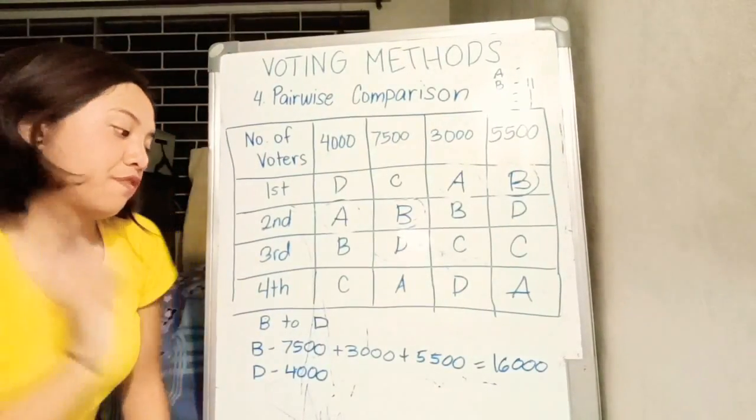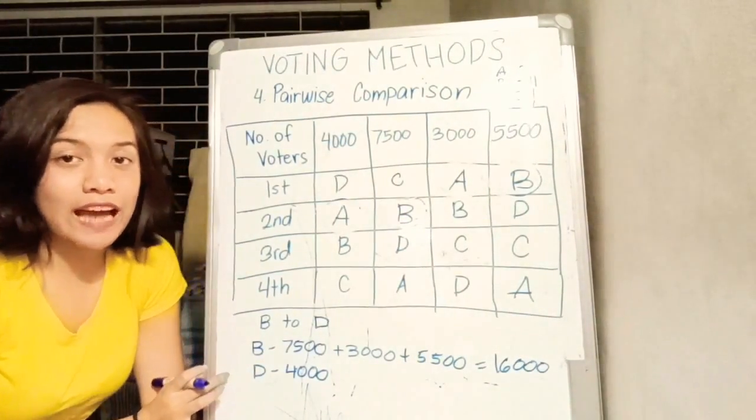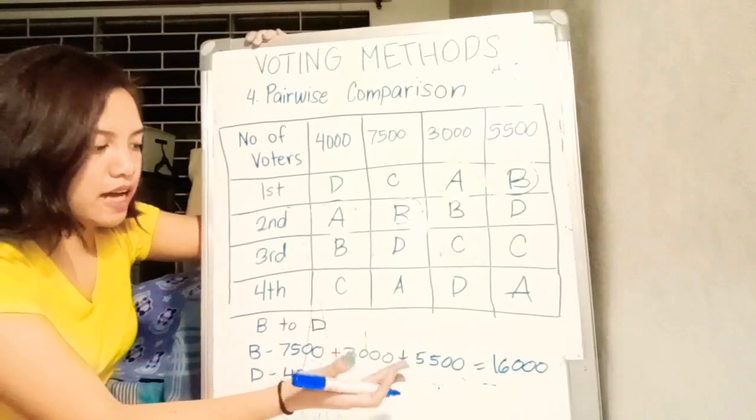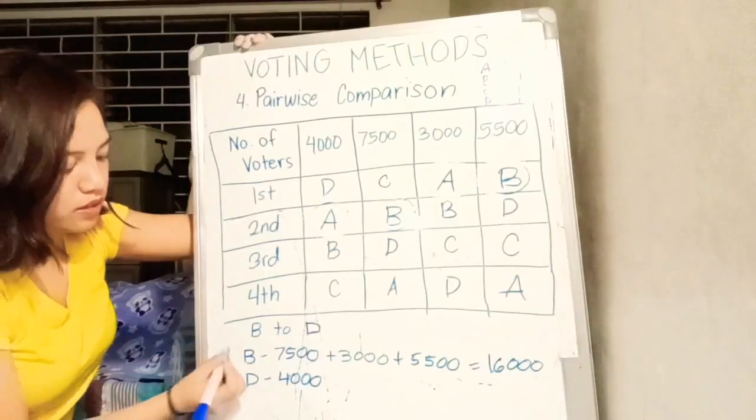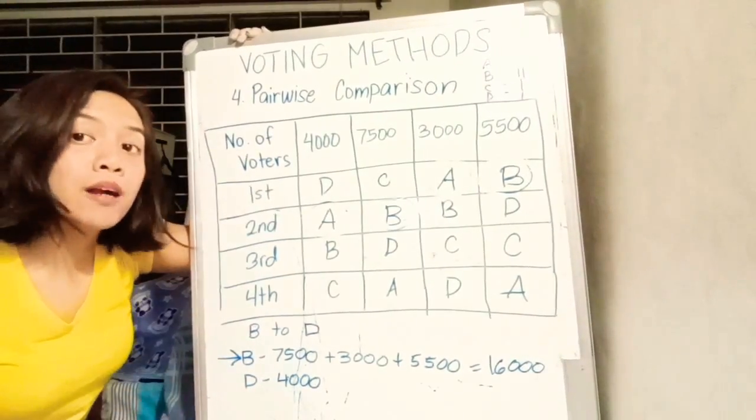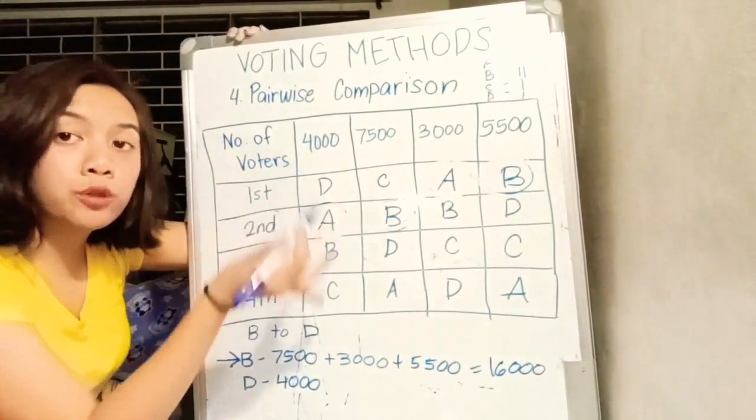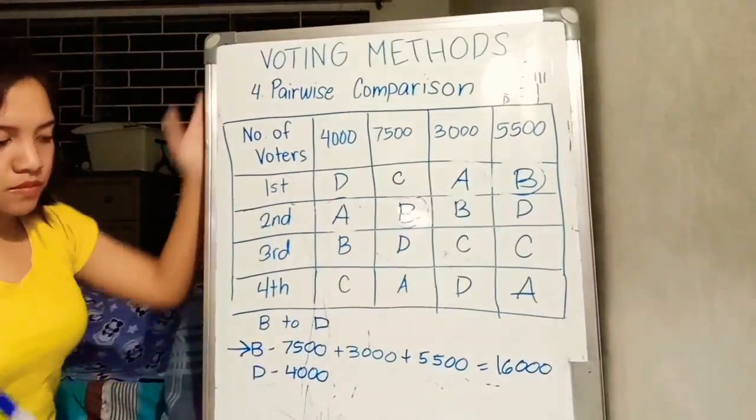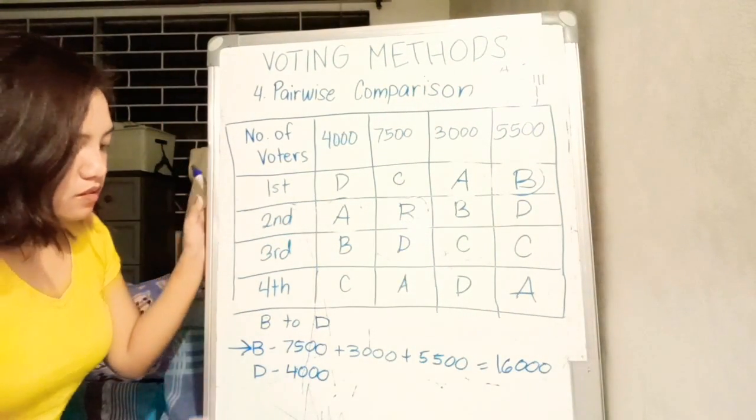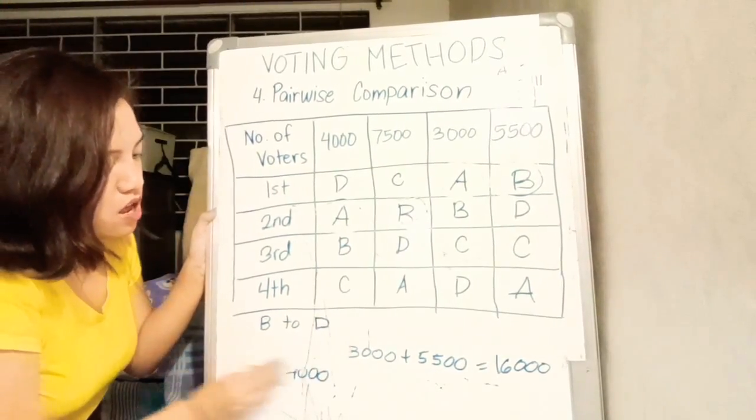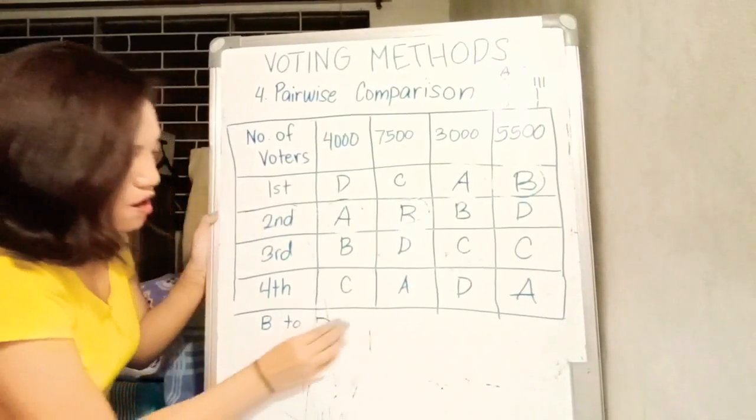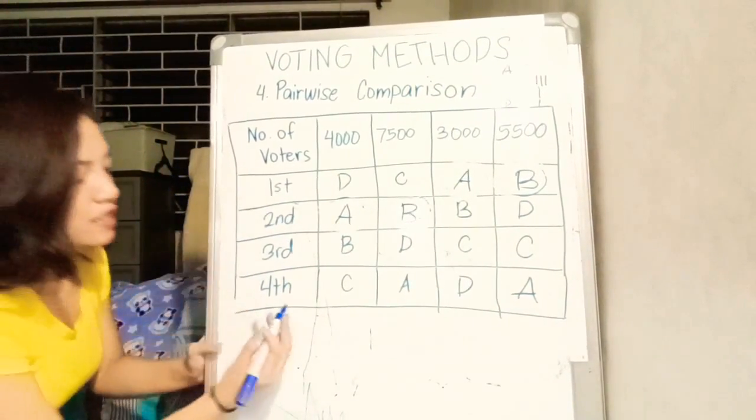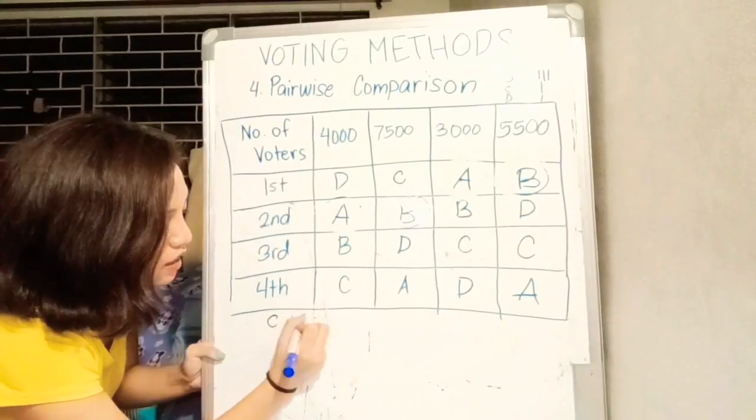16,000 voters prefer candidate D over candidate B. The winner for this pairwise comparison is candidate D. We will give another point to Tanya. Next, since may isa pang pair na kailangan compare. Rhymes. Last is C and D.